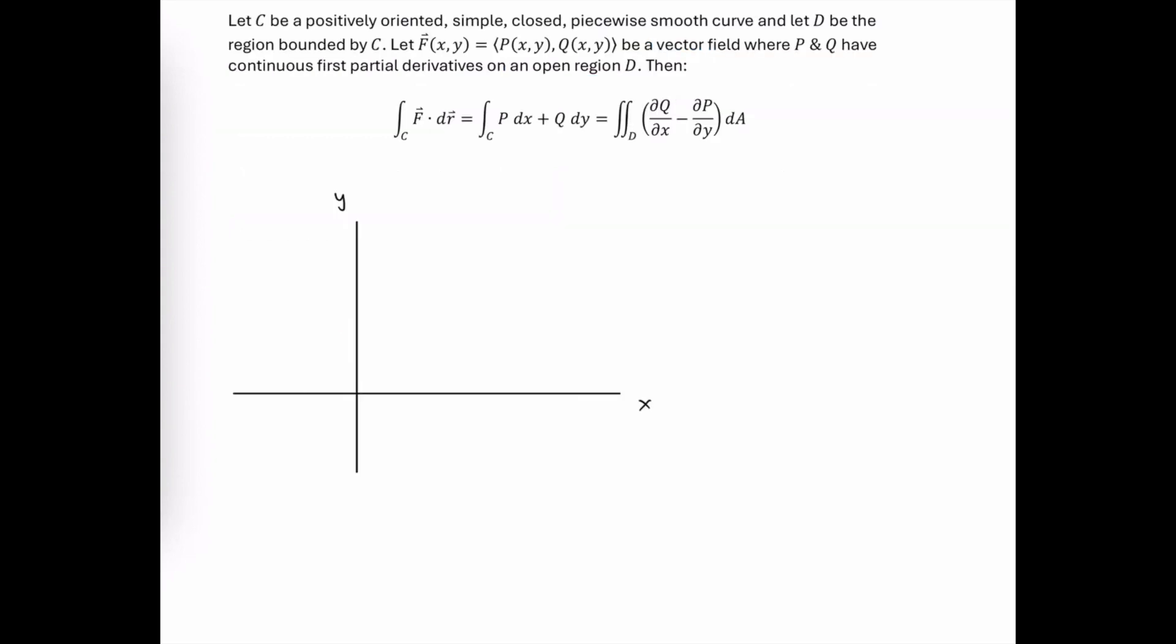In order for Green's Theorem to be applicable, we do have several criteria that need to be met. The path C for the line integral has to be positively oriented, simple, closed, and piecewise smooth.